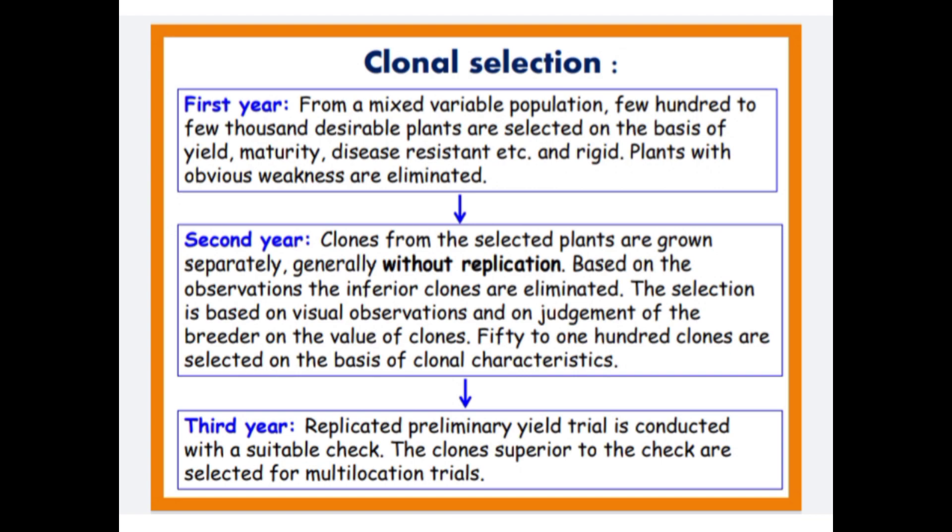Clonal selection year by year: In year 1, from a mixed variable population, a few hundred to a few thousand desirable plants are selected on the basis of yield, maturity, disease resistance, and rigidity. Plants with obvious weakness are eliminated.